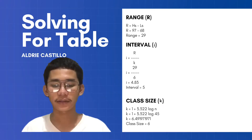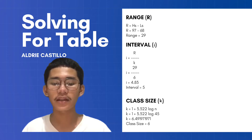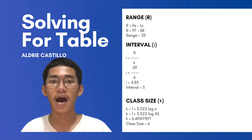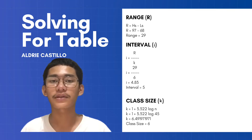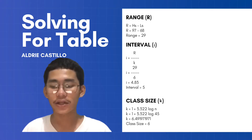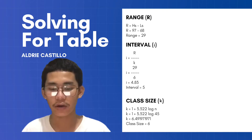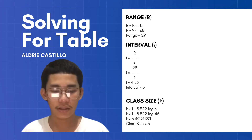In solving for the table, we need these steps because in order to make a frequency distribution table, we need the numbers portrayed in the solving. The first step is solving the range. Range is the difference between the highest and the lowest score — the highest score acts as the minuend while the lowest score is the subtrahend. In our data, the highest score was 97 and the lowest score is 68. 97 minus 68 is equal to 29, so 29 is the range.